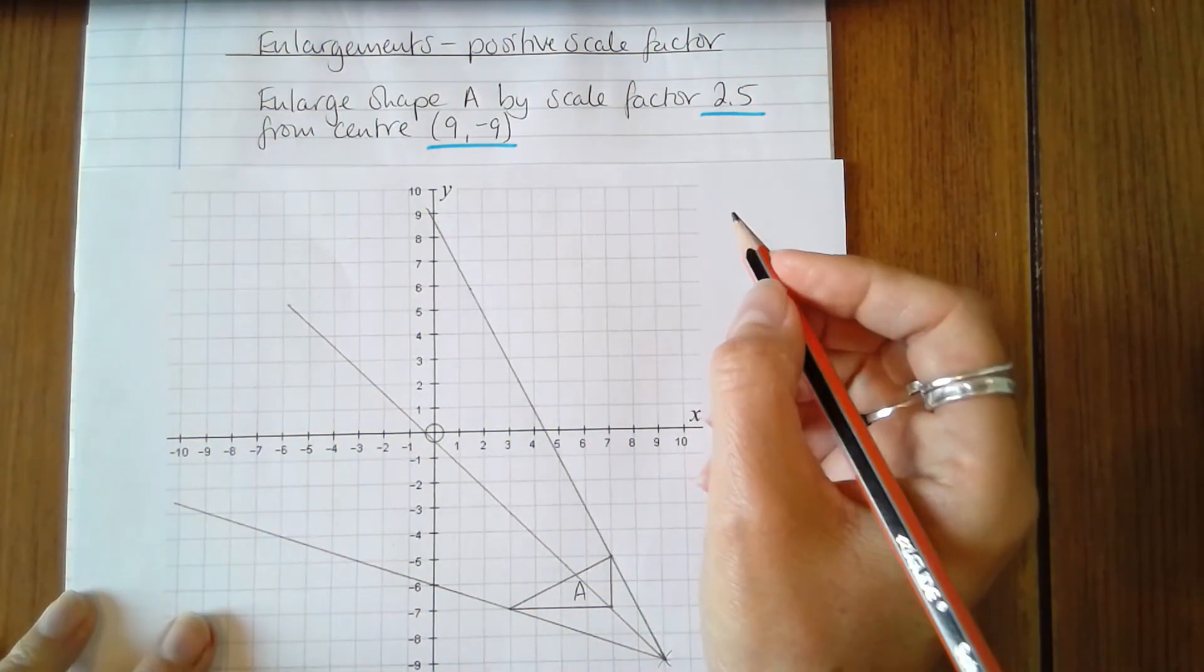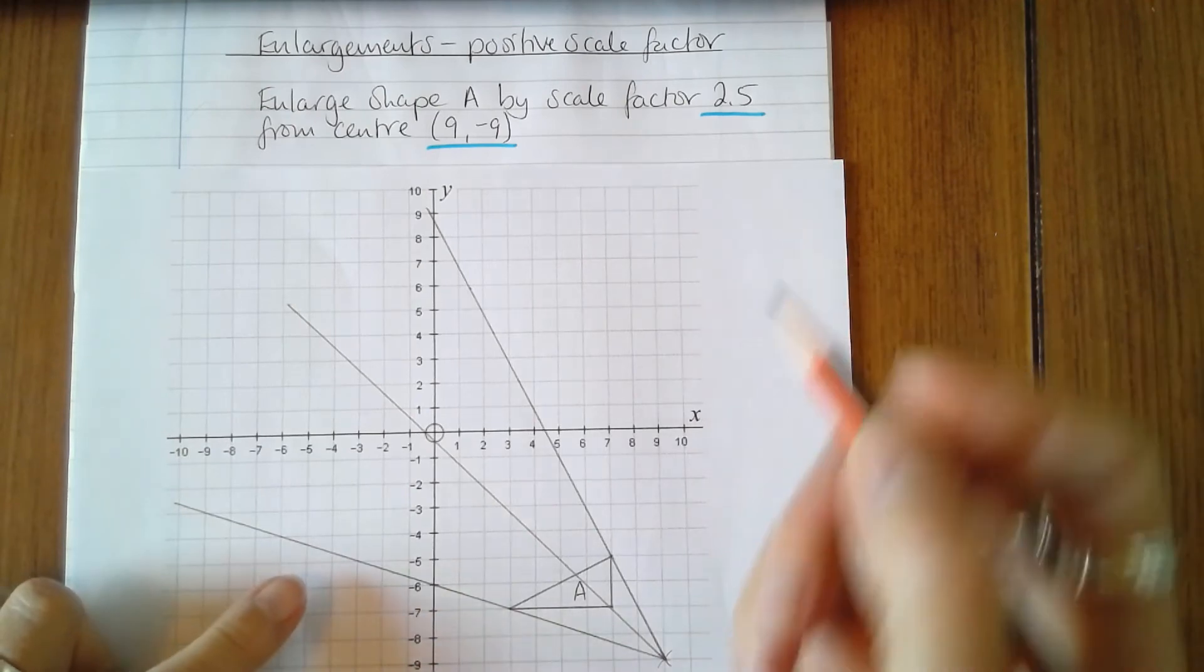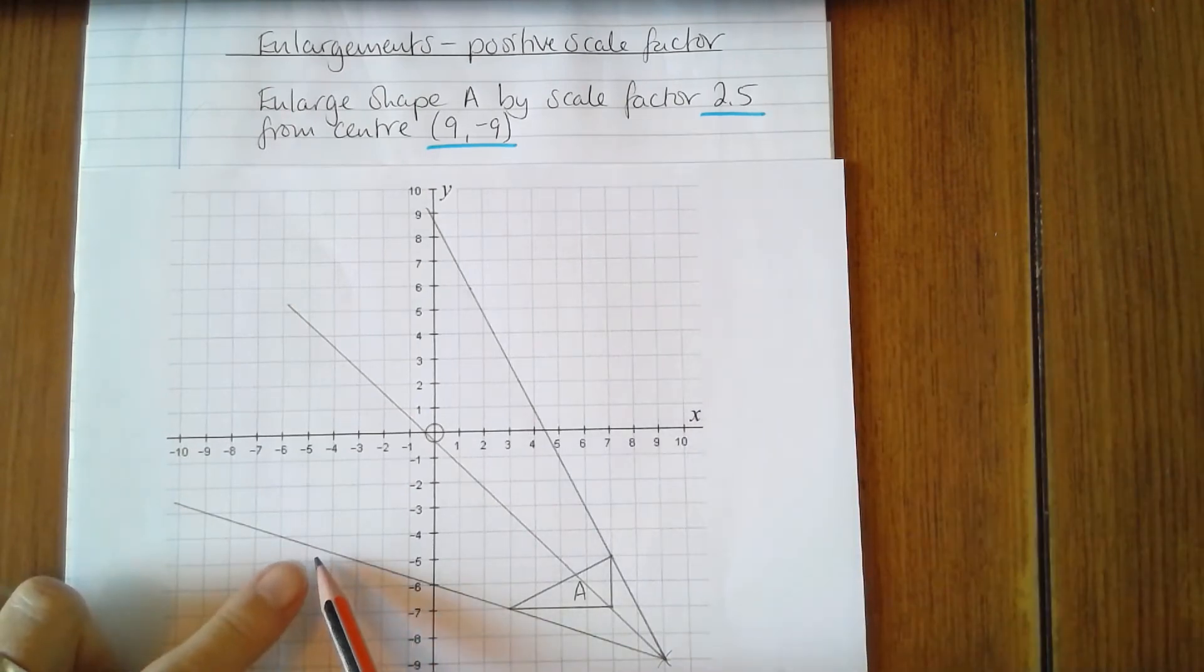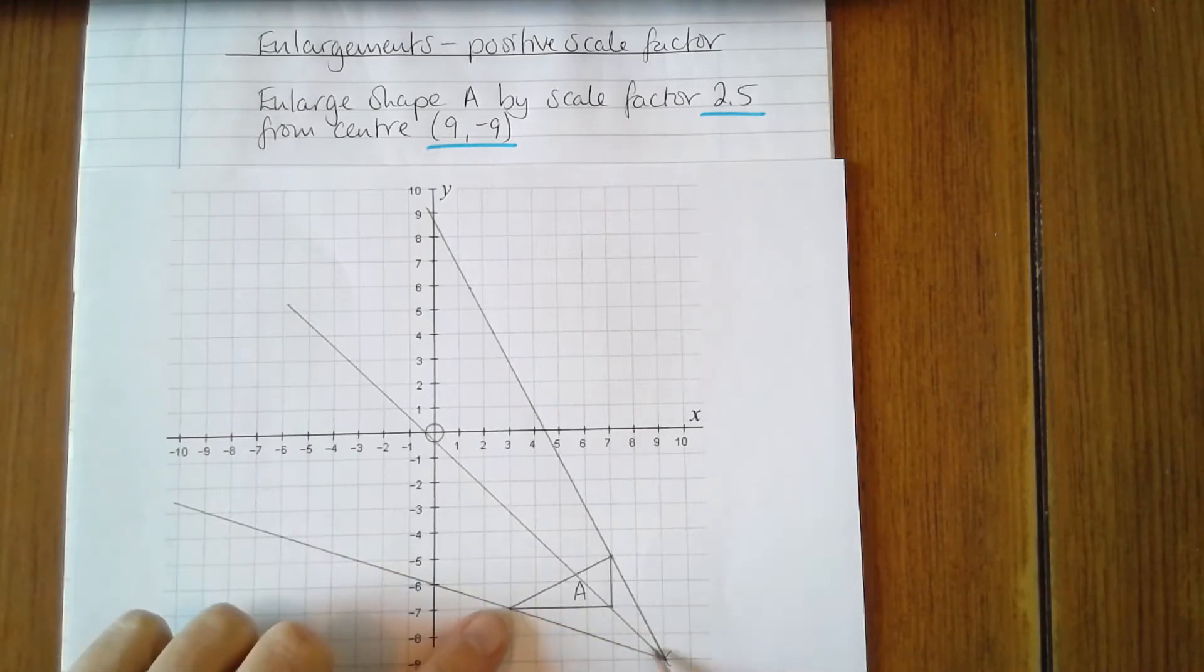In order to find the coordinates of the new shape, the vertices of the new shape, I'm going to count squares from the center to each of the vertices going across and up. So I'm going to the left, so that's negative, and I'm going up.